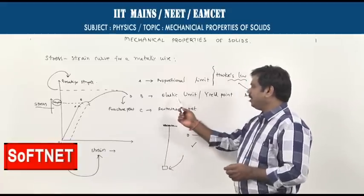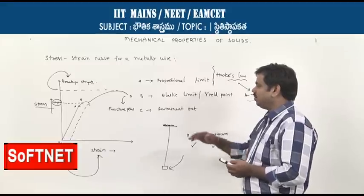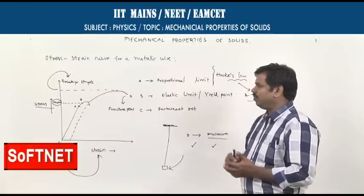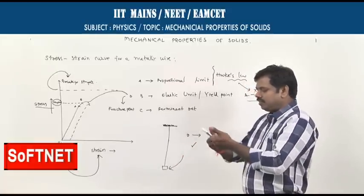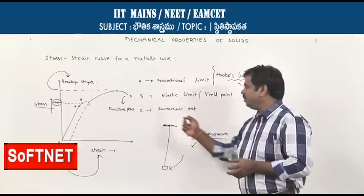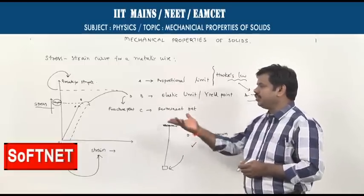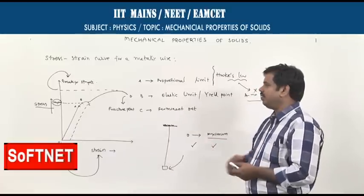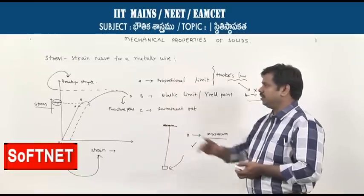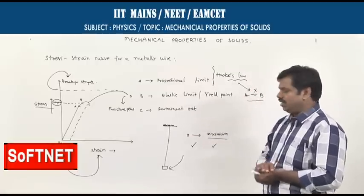After point B — the elastic limit — when you keep increasing the load, the wire flows like a fluid. Without increasing the load further, the wire elongates very easily. So point B is called the yield point. Soon after the permanent set, without much increase in load, the wire elongates and elongates until it breaks. The stress at which the wire breaks is called the breaking strength.